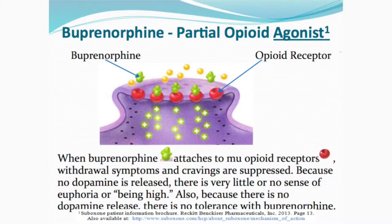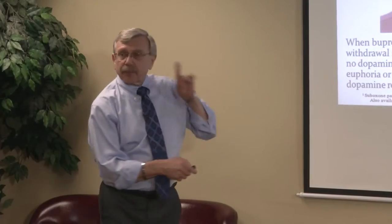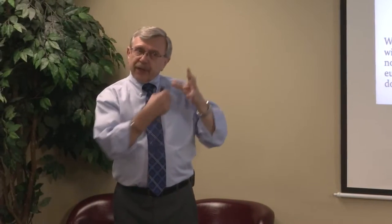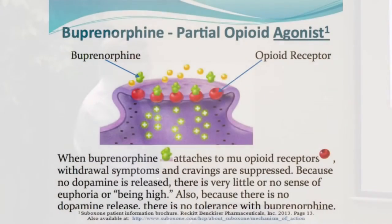Buprenorphine attaches to exactly the same receptor as methadone and heroin, but because there's no dopamine release, there's very little or no sense of being high. As far as the brain is concerned, the opioid receptor is filled up, so the brain doesn't produce withdrawal symptoms or cravings. That's how buprenorphine blocks withdrawal and craving.